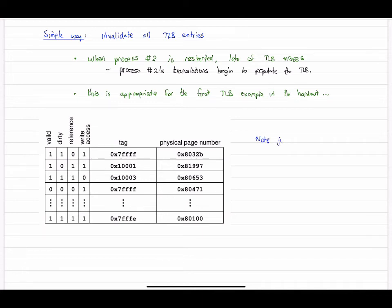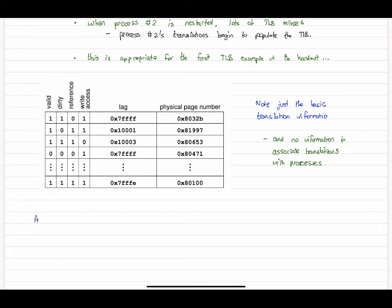Here's a basic TLB. Now notice that we've added a few more status bits here: the dirty, reference, and write access bits. Dirty means much the same thing as it does in a cache - it's been written into. Reference means it's been used recently, and write access means we can write into it, say with a stored word instruction. Otherwise, it's just the basic translations: tag and physical page number. There's no association whatsoever with the process involved here.